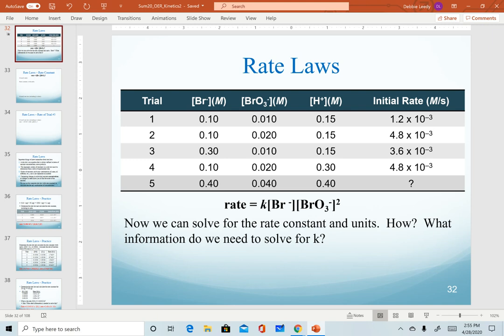Now that we have solved for the rate law for our practice equation, the last two steps are to find the rate constant, which has units, and then to determine the value for another trial using different concentrations.